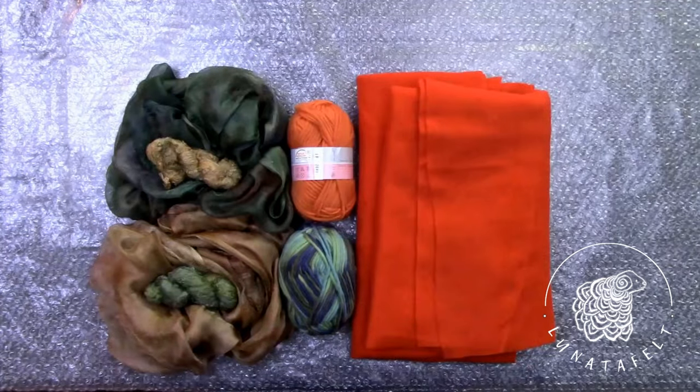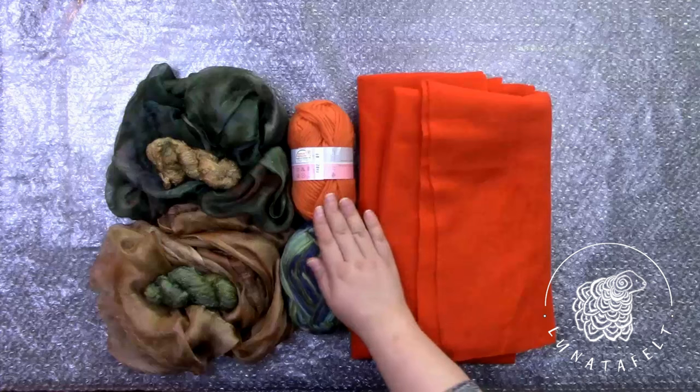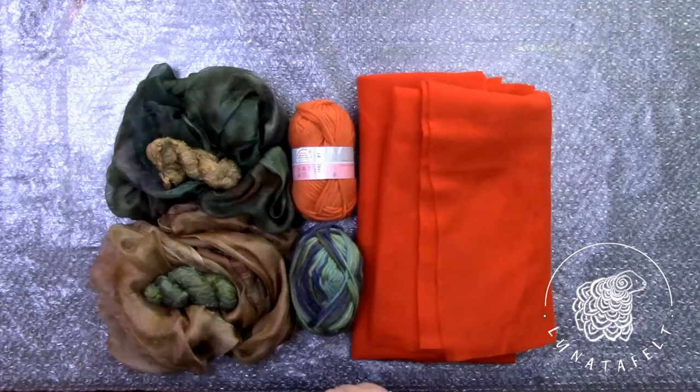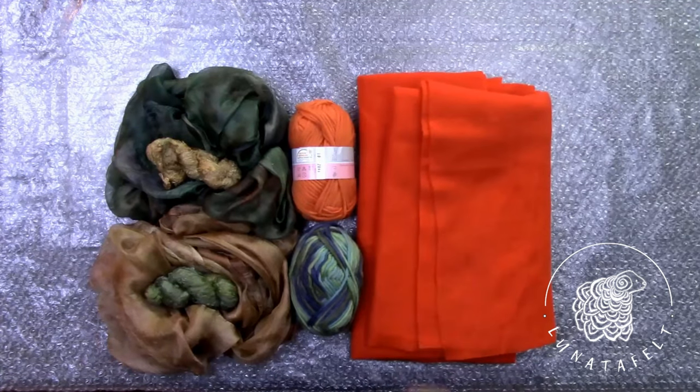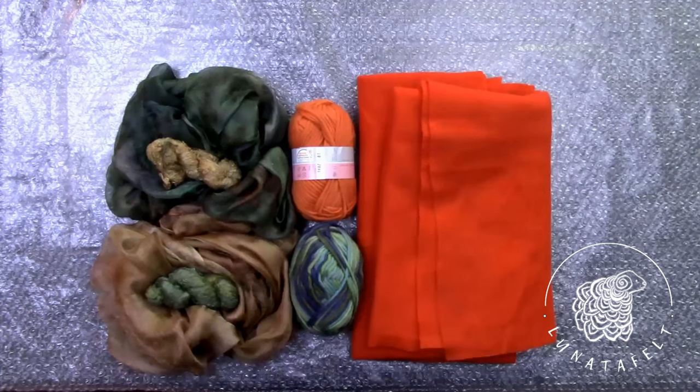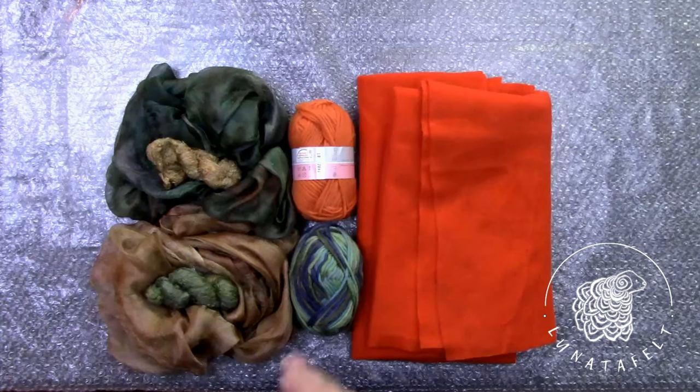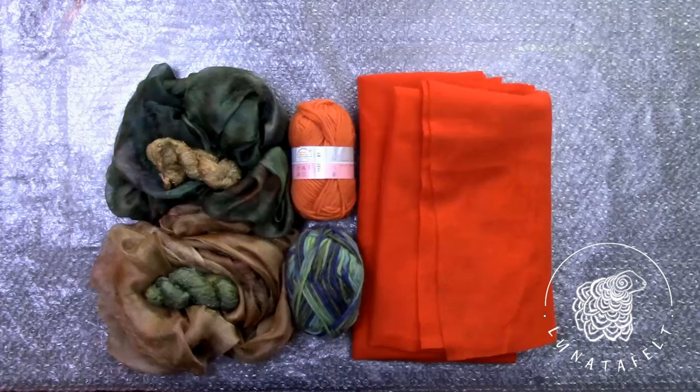For this work, we will need prepared pre-felt made from 18 micron merino wool, 150 centimeters long and 60 centimeters wide. We will also need a couple of skeins of wool yarn. Additionally, two pieces of silk, each 160 centimeters long and 60 centimeters wide, are required. This can be chiffon, silk gauze, or sparse marjolan silk in colors that complement the wool pre-felt.